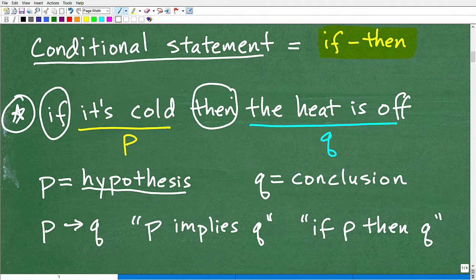Then whatever goes after the then part of this statement is called the conclusion. So the hypothesis is it's cold. And then the conclusion for this particular statement is the heat is off. And the whole thing together is a conditional statement. If it's cold, then the heat is off. The hypothesis, which we use the notation P, is it's cold. And the conclusion, which we use notation Q, the heat is off. And I was a little extra redundant there, but I want you to understand that's all a conditional statement is.